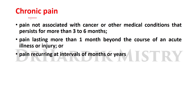Chronic pain is pain not associated with cancer or other medical conditions that persists for more than three to six months. It also includes pain that lasts more than one month beyond the course of an acute illness or injury, or pain that recurs at intervals of months or years.